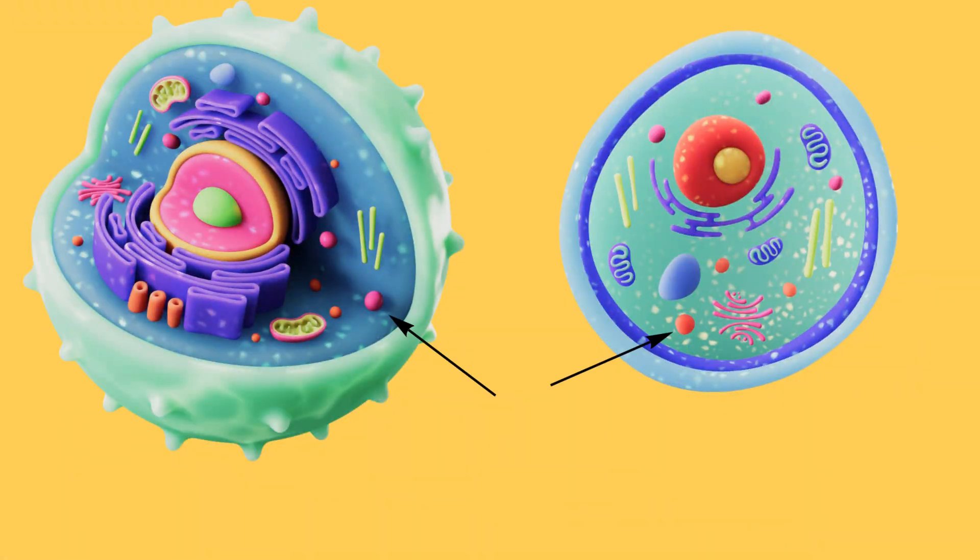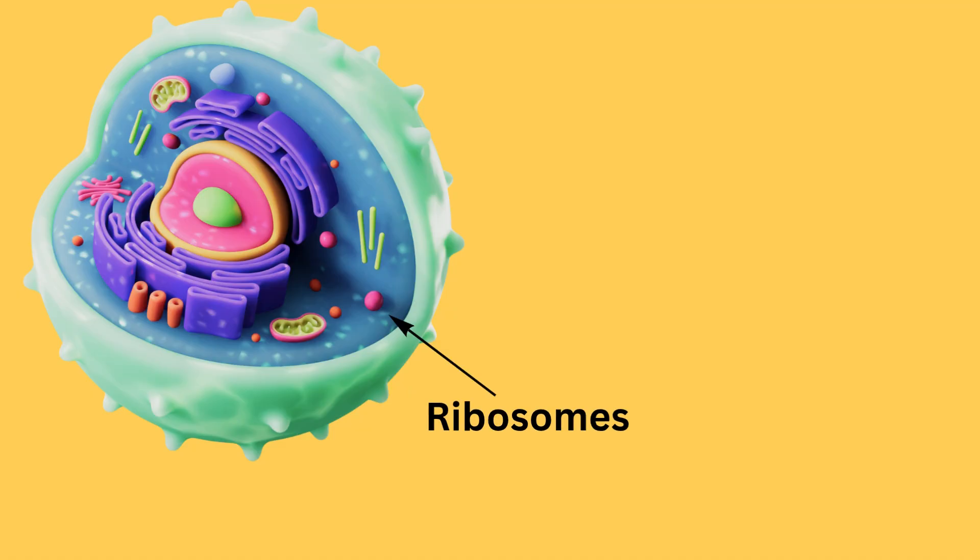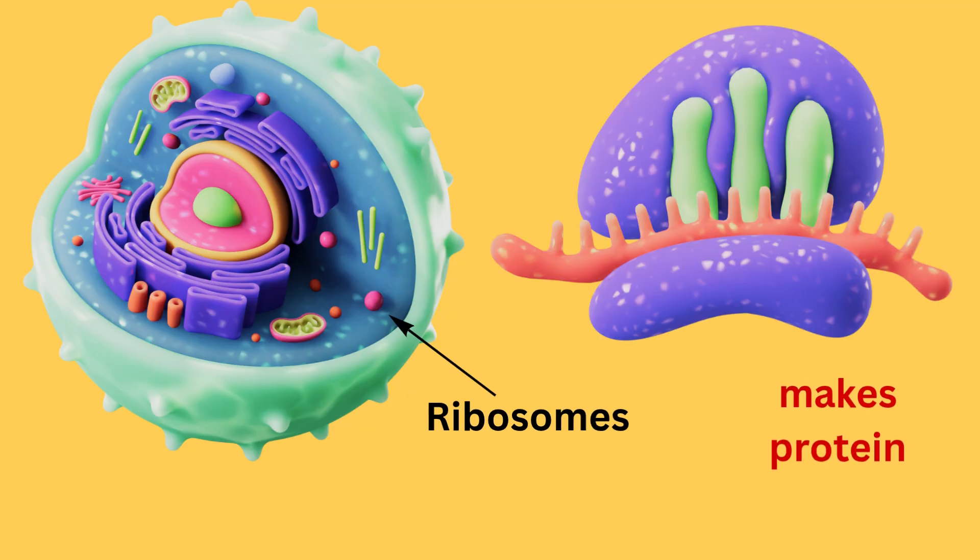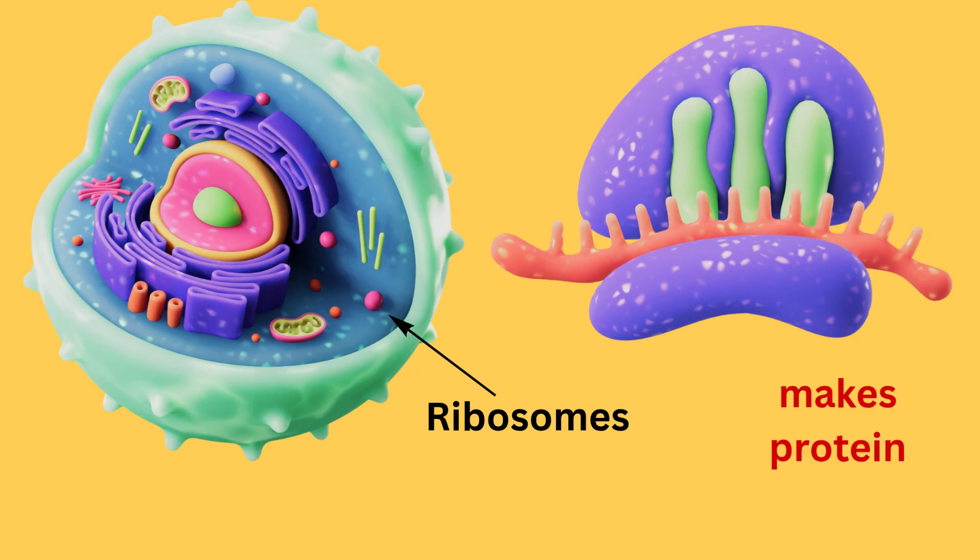These tiny structures, which are floating in the cytoplasm, are called ribosomes. They make proteins from amino acids. And they are also found on rough endoplasmic reticulum.